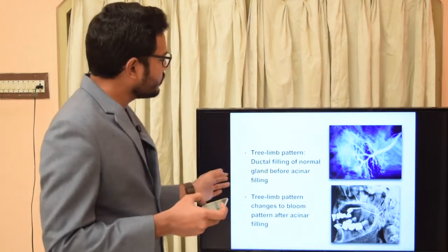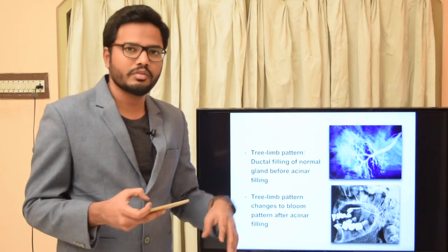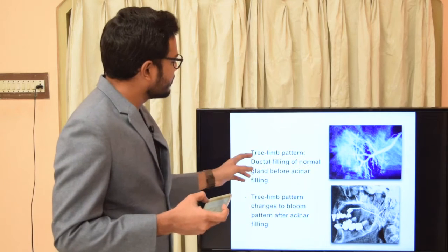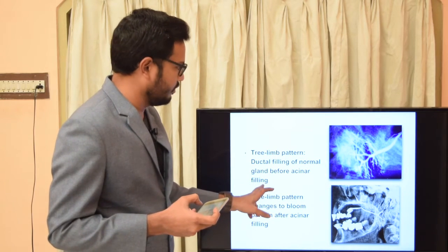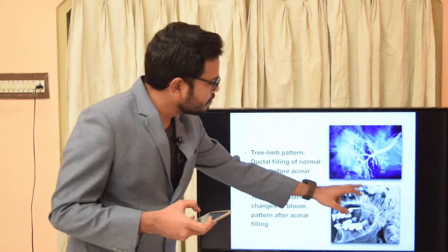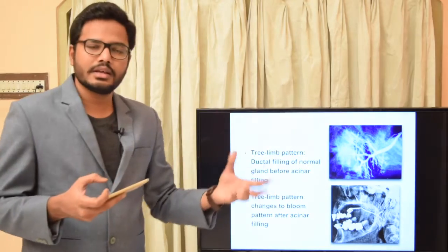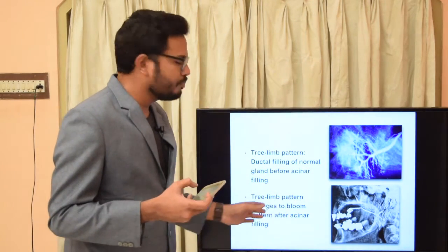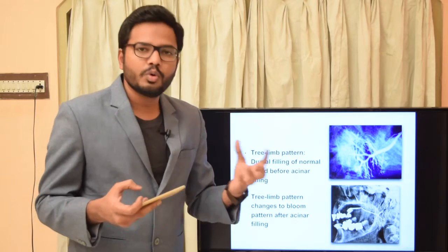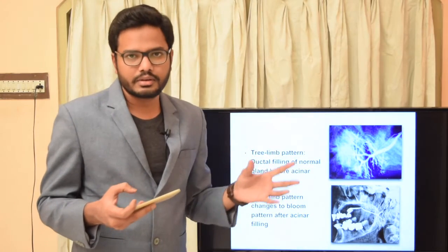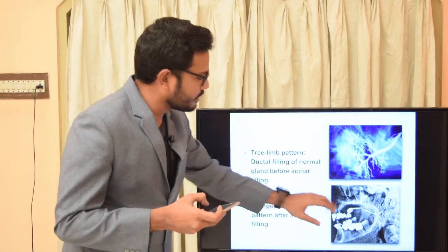Now looking at normal sialographic appearances of various salivary glands. The tree limb pattern is the ductal filling of a normal gland before acinar filling. These two images represent the tree limb pattern. Once there is acinar filling, there will be a bloom pattern — like when flowers bloom on a tree. So this is tree limb appearance, and the bloom pattern occurs with acinar filling.